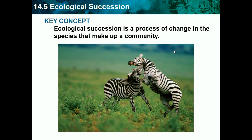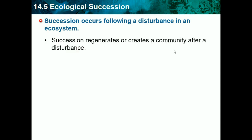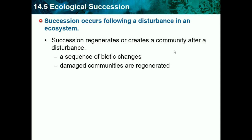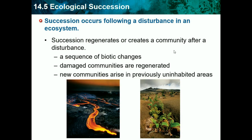Ecological succession is a process of change in the species that make up a community — basically remaking or starting a new community. Succession occurs following a disturbance in an ecosystem, such as when an ecosystem burns or is covered by lava. It regenerates damaged communities or creates new ones in previously uninhabited areas — for example, after a lava spill, the community will eventually regrow.